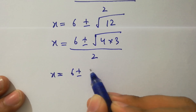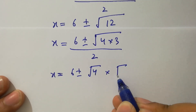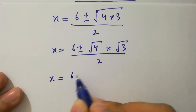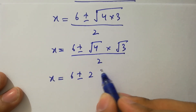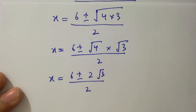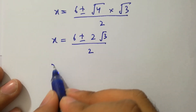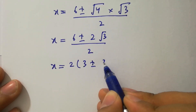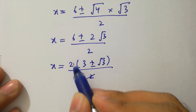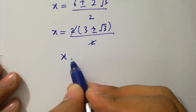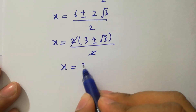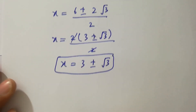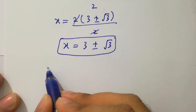This gives x equal to 6 plus or minus square root of 4 times square root of 3, all over 2. Since square root of 4 is 2, we get x equal to (6 plus or minus 2 square root of 3) over 2. Factoring out 2 and canceling, we get x equal to 3 plus or minus square root of 3.